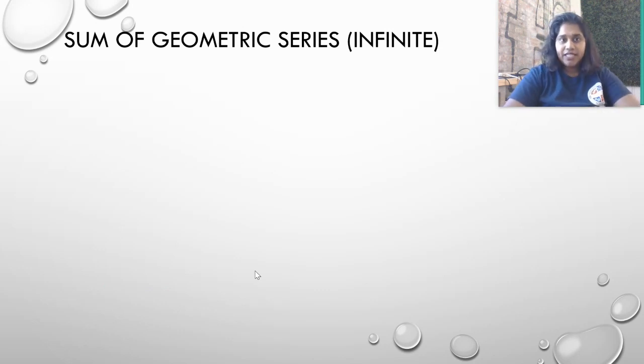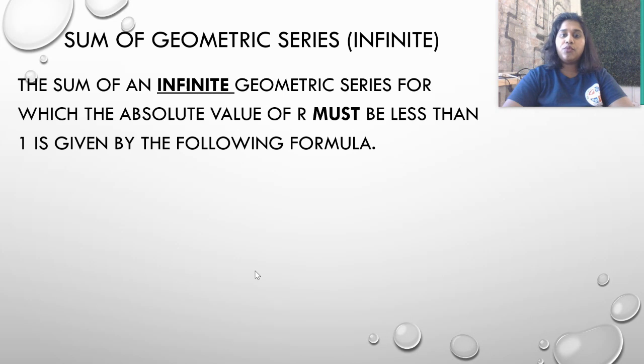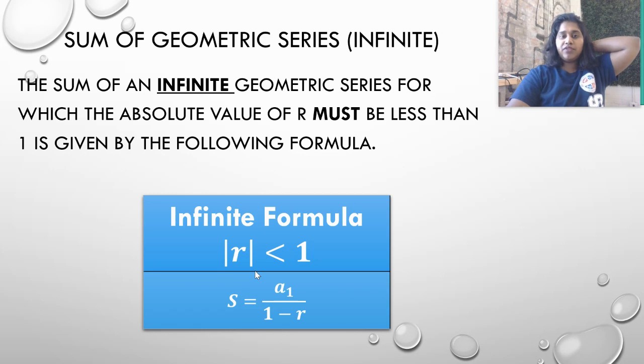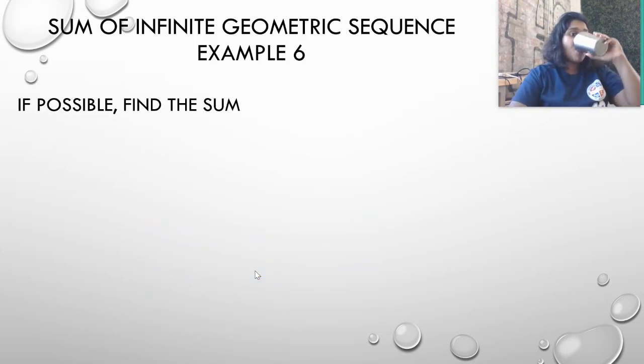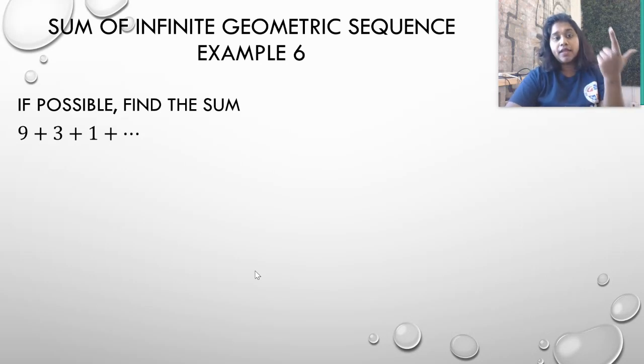So moving on to infinite sums. What happens if we aren't given that final n value? Then when we have an infinite formula, the absolute value of our R value still needs to be less than 1 to use this formula. So you take the first term and you divide by 1 minus your R value, your common ratio. So if possible, if our R value meets our terms, then find the sum. So if we have 9 plus 3 plus 1, the first thing I need to figure out is my R, and then I need to figure out my first term.